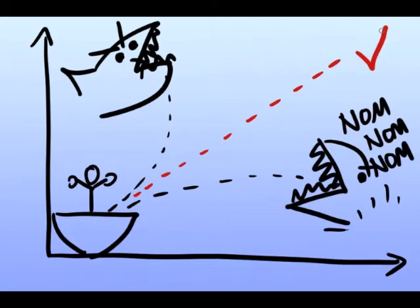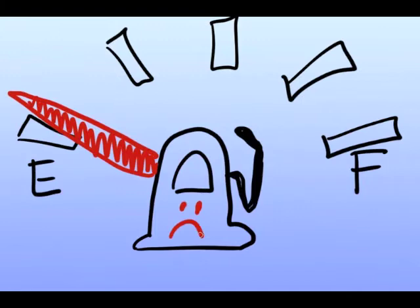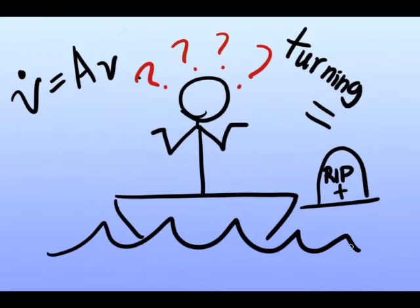Bob also knows that the ocean will control his boat's velocity according to the state space equation V dot equals AV. Unfortunately for Bob, he only has enough fuel left in his tank to give his boat a small push in any direction of his choice. With the knowledge that V dot equals AV and the knowledge that if he turns he will be eaten by sharks, what direction should Bob push himself in?